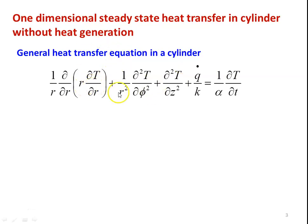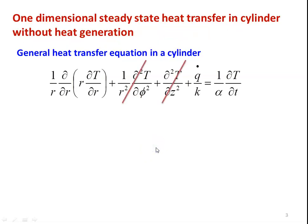The terms are: r is the radial direction, phi is the azimuthal direction, z is the axial direction, q-dot is the rate of heat generation, k is the thermal conductivity, and alpha is the thermal diffusivity of the cylinder material. For one dimensional heat transfer, the phi and z terms are dropped — we consider only heat transfer in the radial direction.